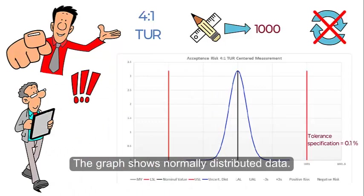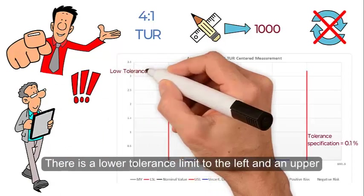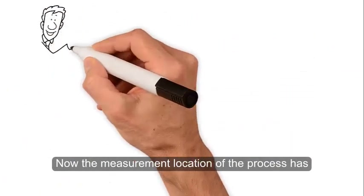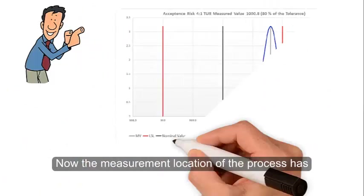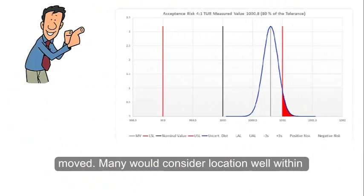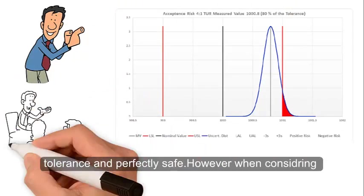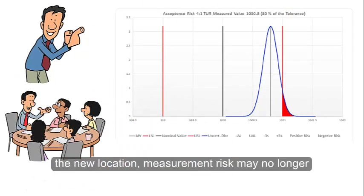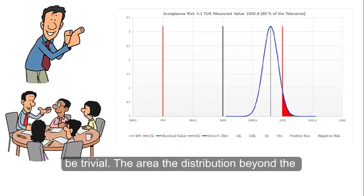The graph shows normally distributed data with a lower tolerance limit to the left and an upper tolerance limit to the right. Now the measurement location of the process has moved. Many would consider this location well within tolerance and perfectly safe; however, when considering the new location, measurement risk may no longer be trivial.